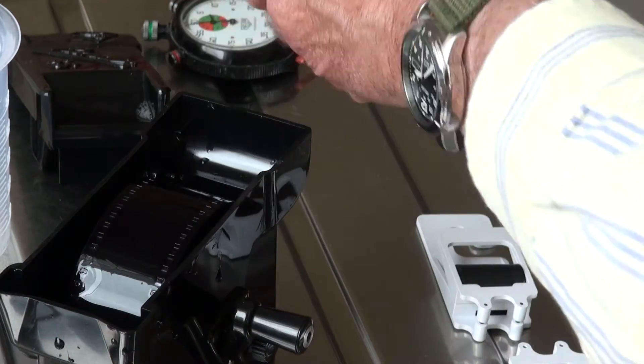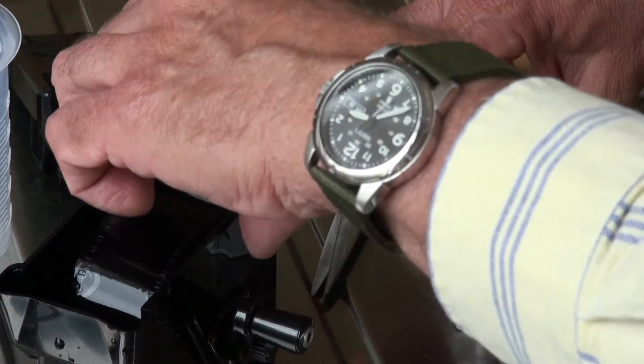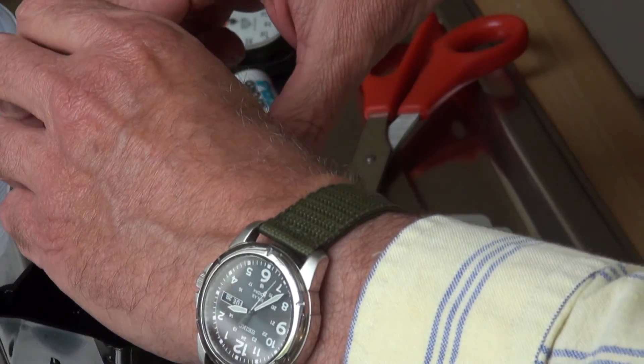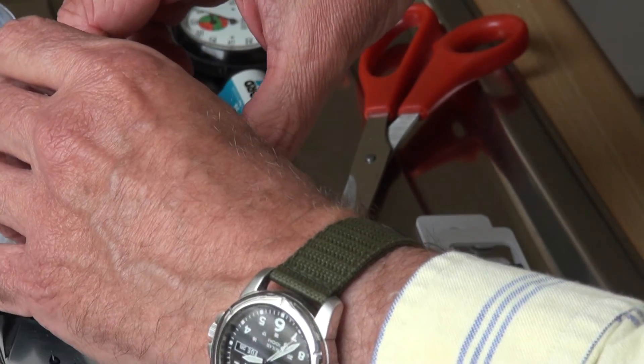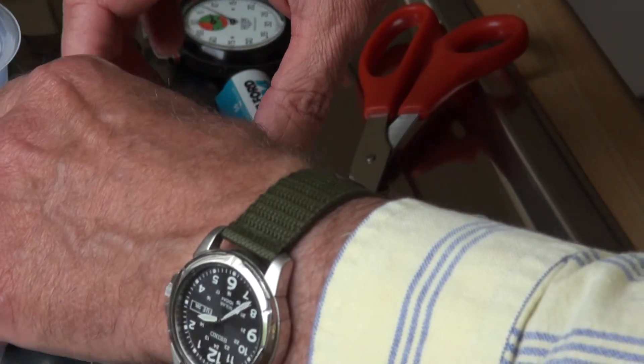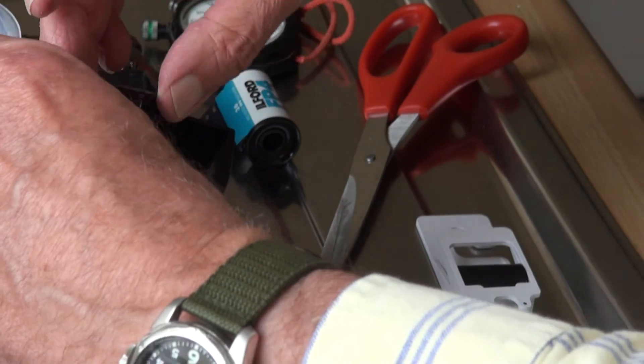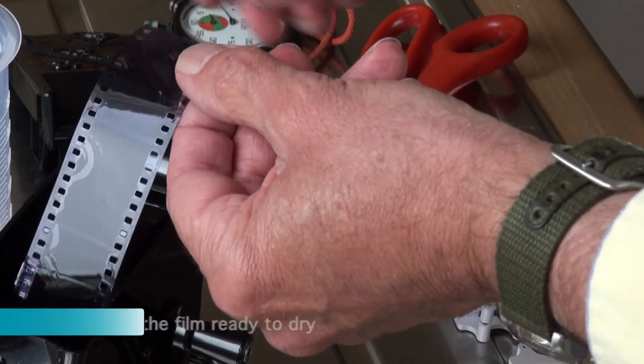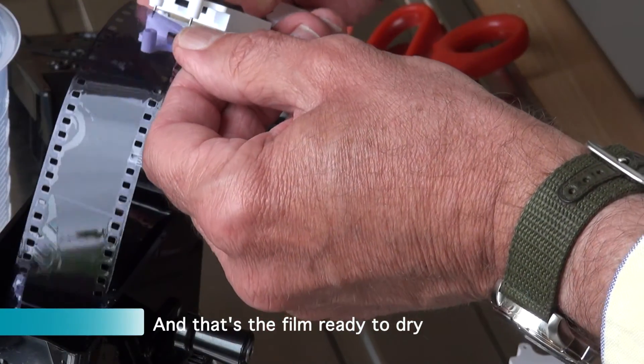And that's the cassette being cut off. Film clip attached. Grab the end. And that's it. The film is ready to dry.